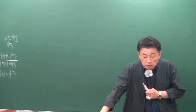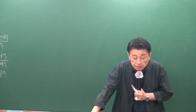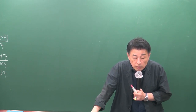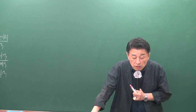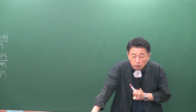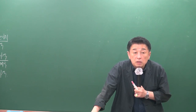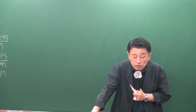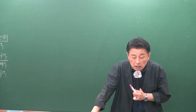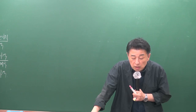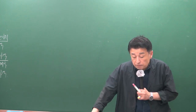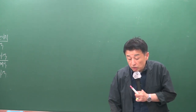시험 문제 2번에서 가격과 가치에 관해 틀린 것을 물었을 때, 4번 보기의 '가치는 가격의 화폐적 표현'은 틀렸습니다. 올바른 표현은 '가격이 가치의 화폐적 표현'입니다. 3번 보기의 '가격은 과거의 값이고 가치는 현재의 값이다'는 맞는 내용으로 정리할 수 있습니다.